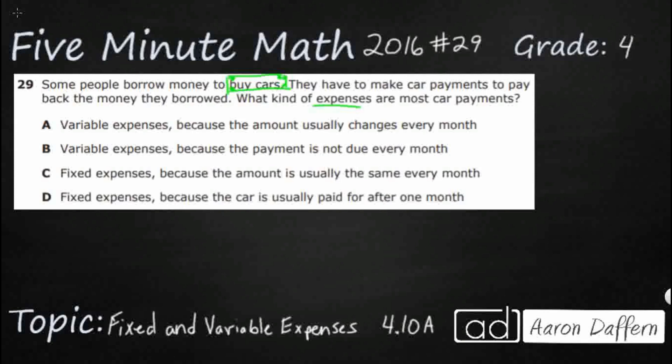So we're trying to figure out what type of expense a car payment is. Most car payments are going to fit into either one of two categories: fixed expenses or variable expenses. When something is fixed — like fixing something to a wall so it doesn't move — a fixed expense stays the same. When something is variable, it changes; it could be high or it could be low.